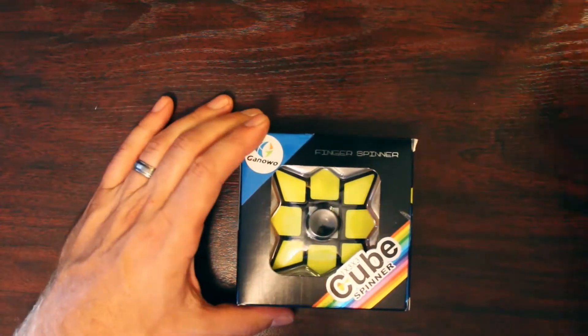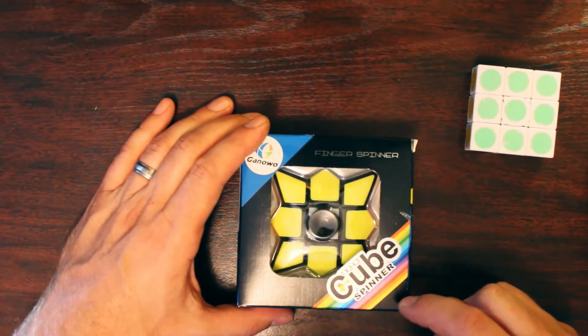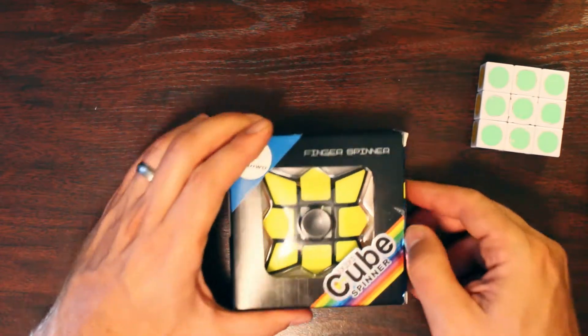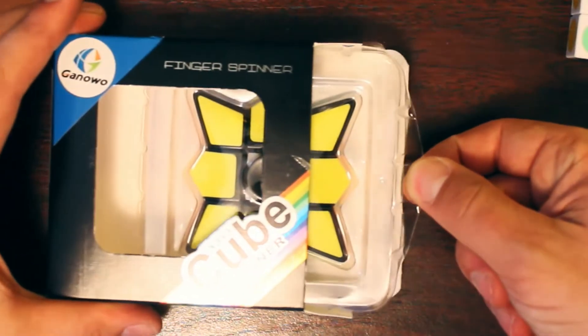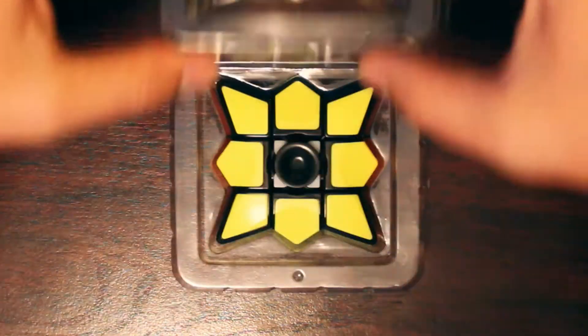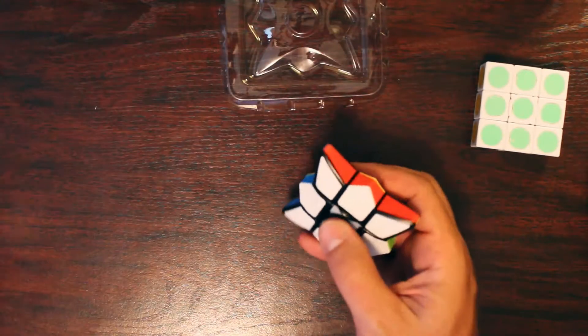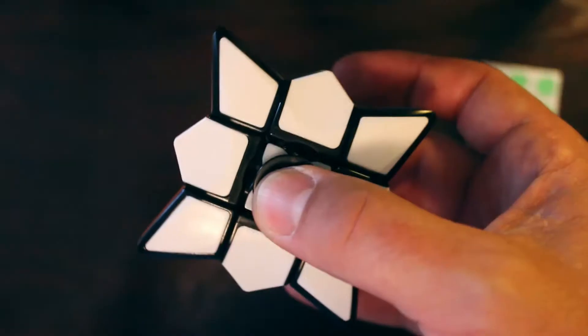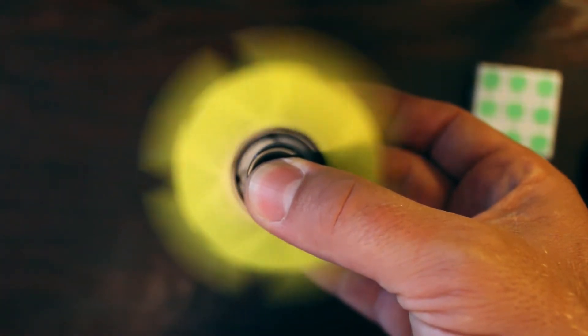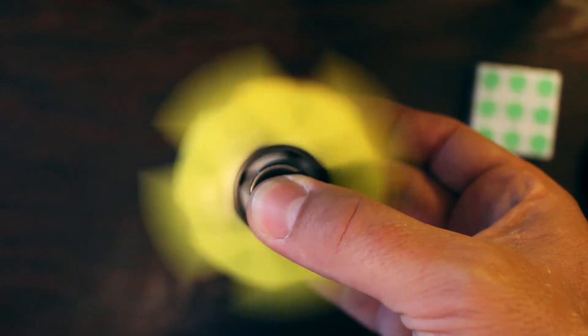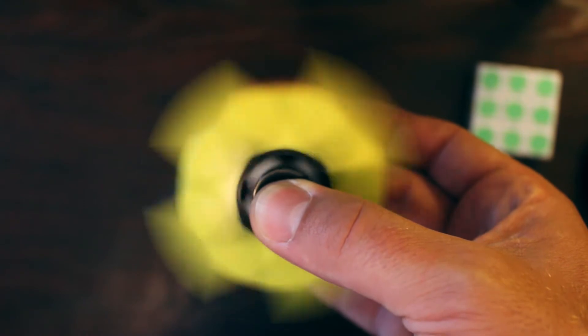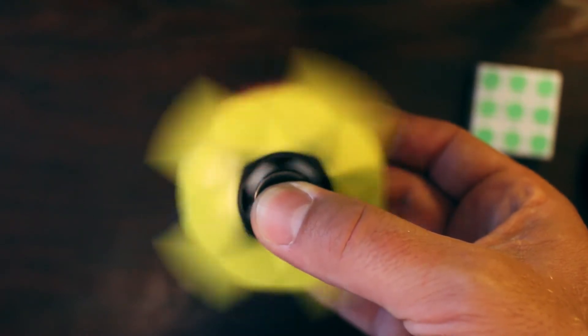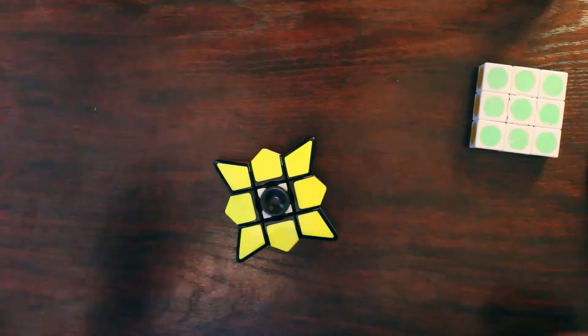And here is the 1x3x3, I'm going to say 1x1x3, 1x3x3 cube spinner. Oh yeah, spins nicely.